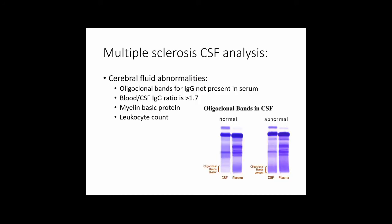CSF analysis in MS shows characteristic findings. Because of autoantibody production against oligodendrocytes, certain proteins are elevated. Importantly — a key exam point — oligoclonal bands are present in the CSF of MS patients but absent in normal individuals. There is also a raised blood-to-CSF IgG ratio indicating increased autoantibody production. Myelin basic protein levels may be reduced, and the leukocyte count in the CSF is raised.